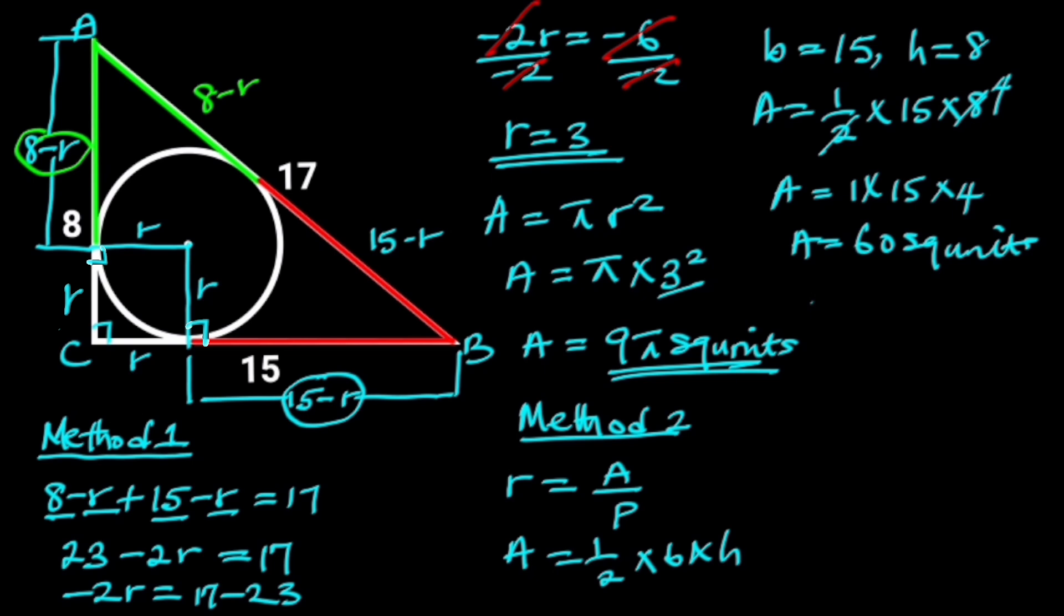To find the semi-perimeter P, P is equal to 8 plus 15 plus 17 all divided by 2, which will give us 40 over 2. 40 divided by 2 is 20. Hence, the radius of the circle R is 60 divided by 20, which is 3.